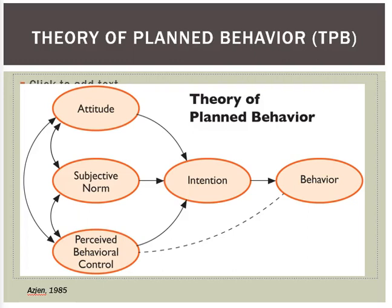The Theory of Planned Behavior states that behavioral achievement depends on both motivation — which is intention — and the ability to control our behaviors. In other words, we might have the intention to do something, but if we feel we don't have control over our behaviors to actually do it, then the likelihood that we will practice that behavior is low.